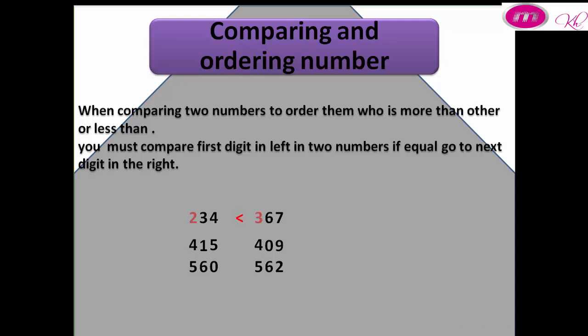In the second example, we have 415 and 409. We must look at the first digit on the left: it is 4. It's equal, so go to the right in tens. We have 1 in the first number and 0 in the second number. That means the first number is more than the second number: 415 is more than 409.